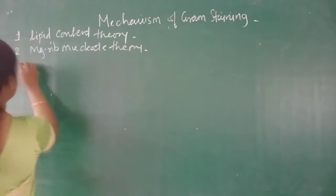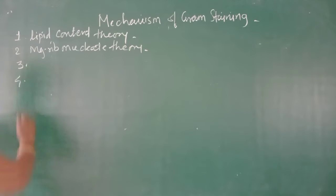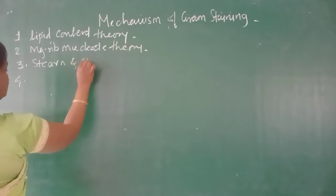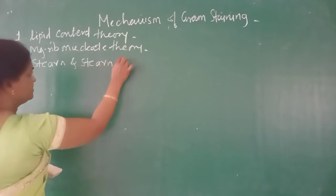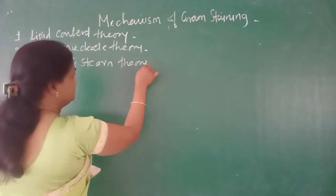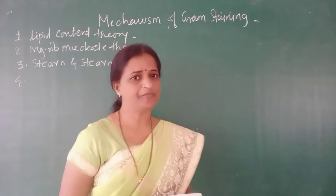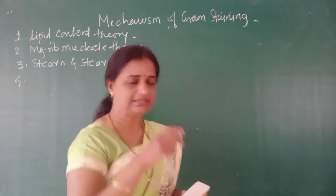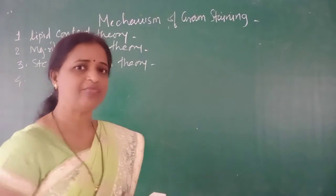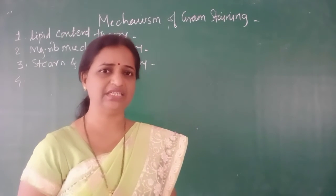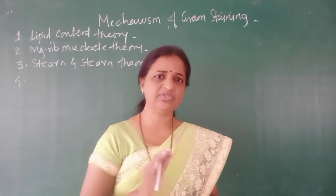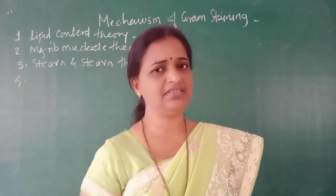Now let us see the third and fourth mechanisms of Gram staining. The third mechanism is the Stern and Stern theory. According to this theory, in the case of both Gram positive and Gram negative cell walls, lipids are present. In Gram negative cells, a very large percentage of lipids are present in the cell wall compared to Gram positive.